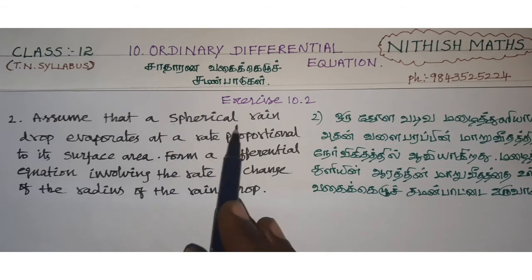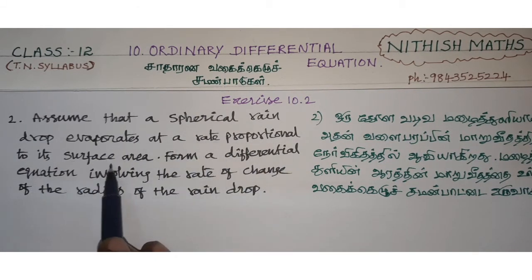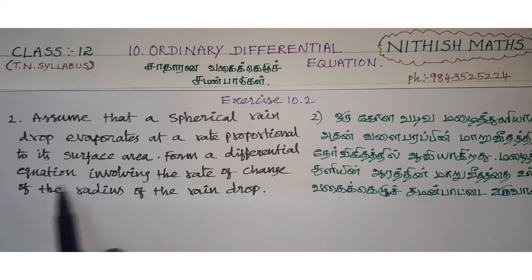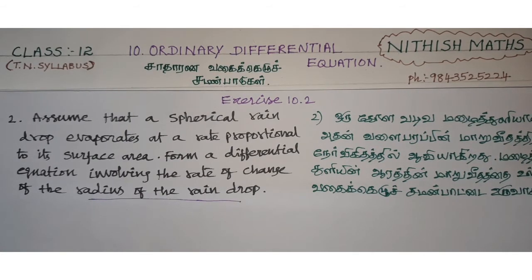Assume that a spherical raindrop evaporates at a rate proportional to its surface area. Form a differential equation involving the rate of change of the radius of the raindrop.